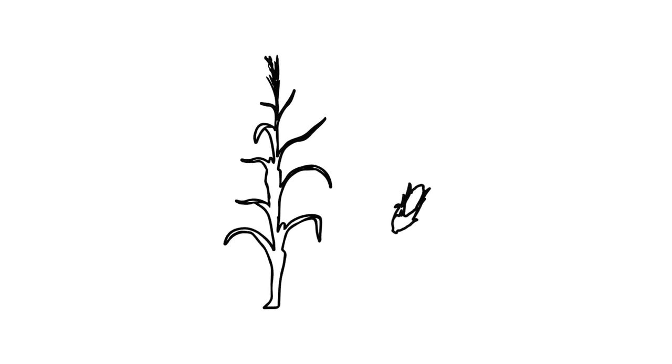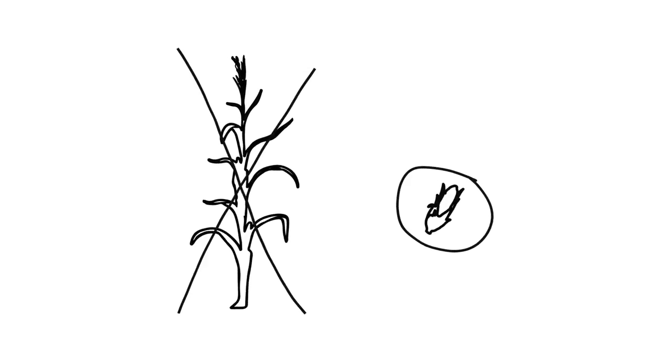Imagine a corn plant. When we think of where sugars might live in a corn plant, we probably first think of the grain.